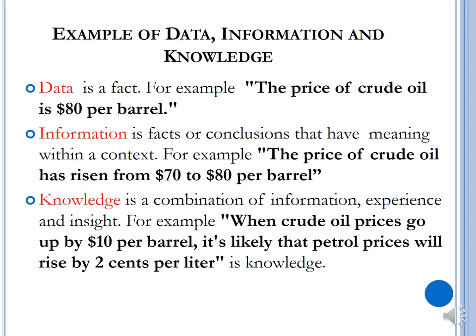Let's look at an example that compares the difference between data, information, and knowledge. Data is a fact — for example, the price of crude oil is $80 per barrel. Information is facts or conclusions that have some meaning — for example, the price of crude oil has risen from $70 to $80 per barrel. But knowledge is when we compare information, our experiences, and our insight, and we can make the determination that when crude oil prices go up by $10 per barrel, it is likely that petrol prices will rise by $0.02 per litre.